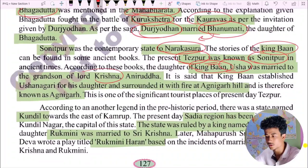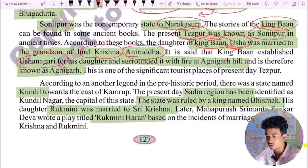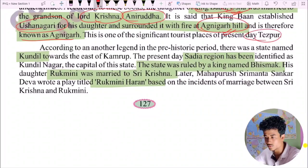In ancient times, according to these books, the daughter of King Bana, Usha, was married to Aniruddha, the grandson of Lord Krishna. According to another legend, in the prehistory period there was a state named Kundib towards the east of Kamarupa. The present-day Sadiya region has been identified as Kundib.